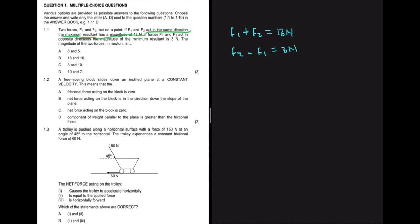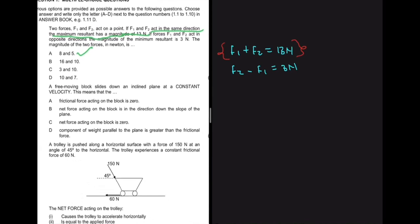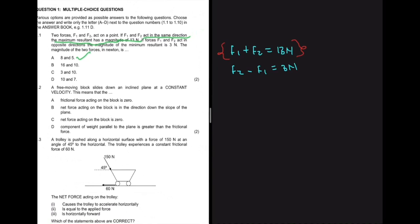The question asks for the magnitude of the two forces in newtons. Our first criteria is F1 plus F2 equals 13 newtons. Looking at option A, we have 8 and 5, and 8 plus 5 equals 13, so A satisfies our first condition. Option B has 16 and 10, which cannot be true. Option C has 3 and 10, which also equals 13. Option D has 10 and 7, which is not true.